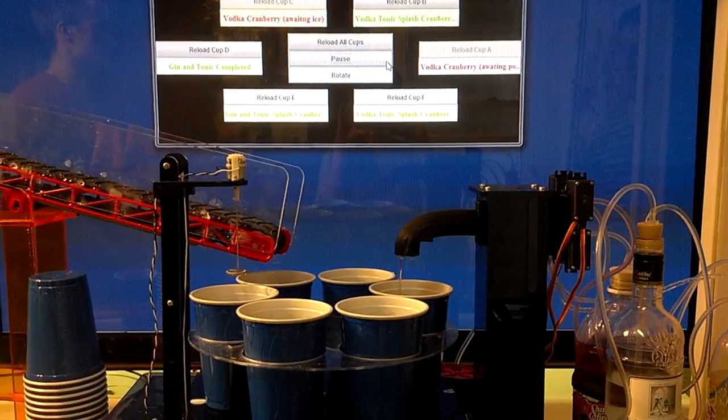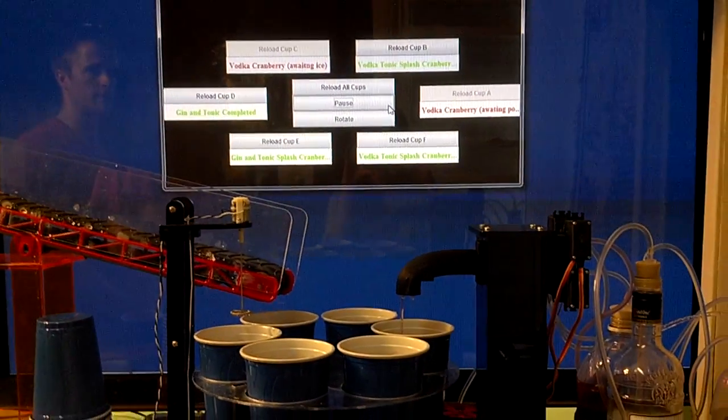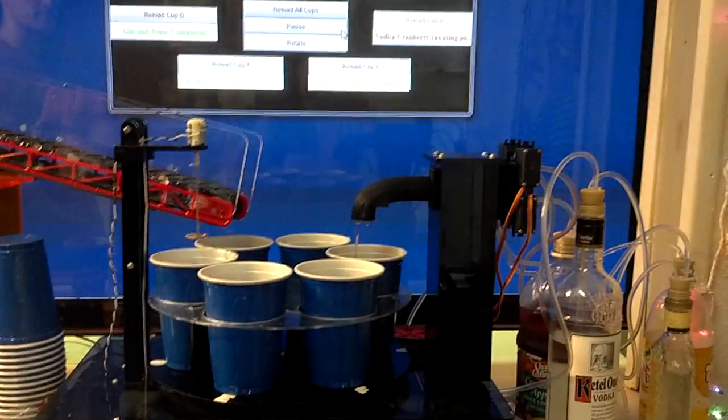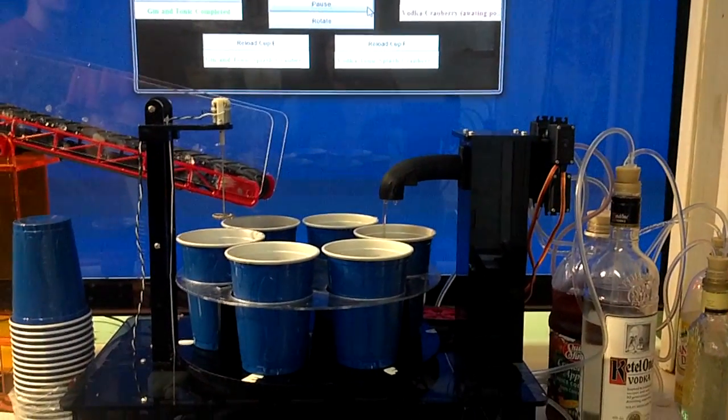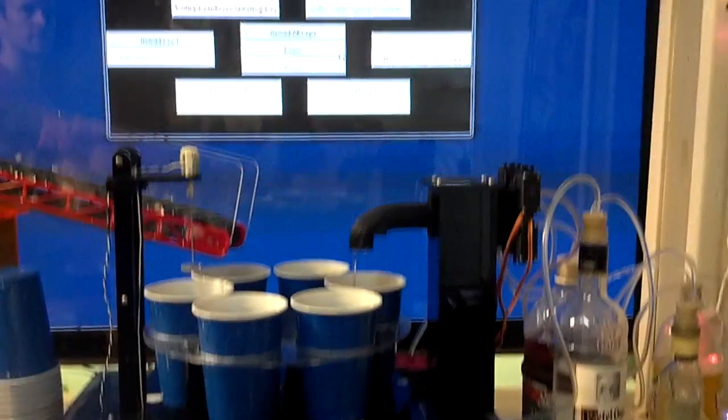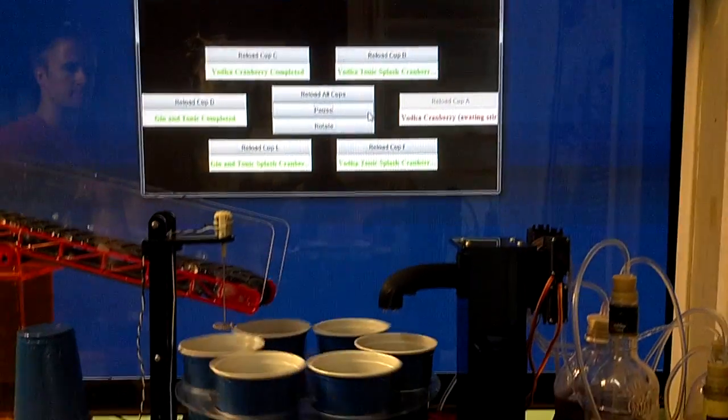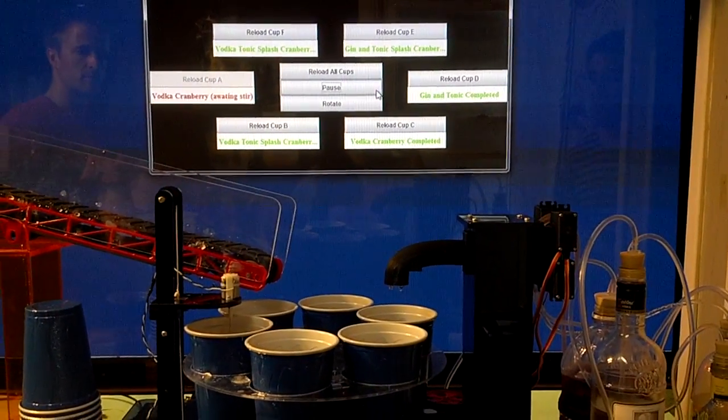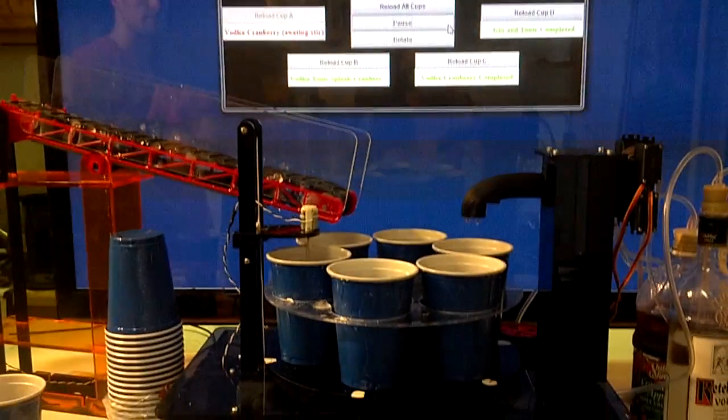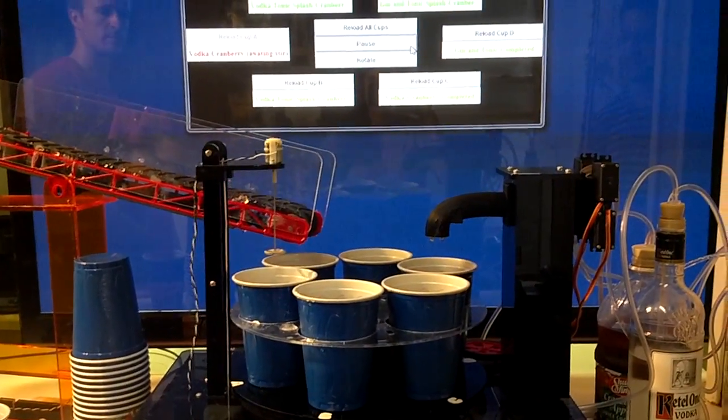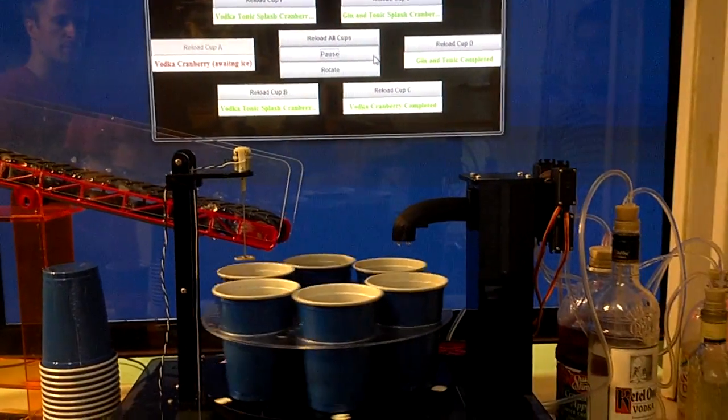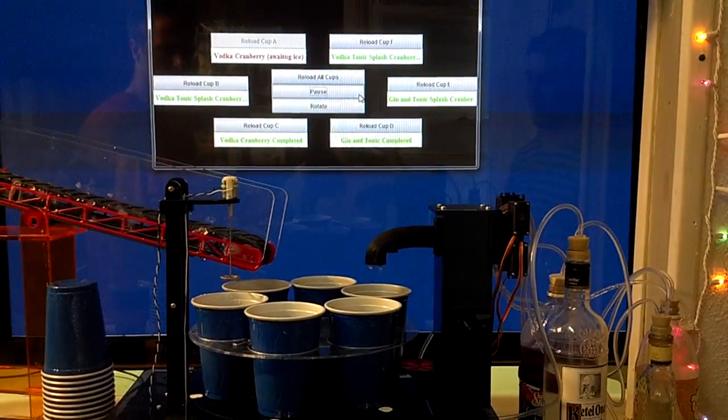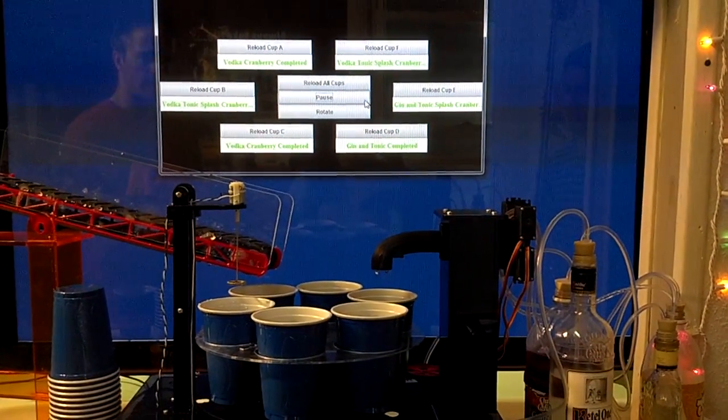As you can hear, the system is also announcing what drinks are being made available as they're being made. So we have one more vodka, two more vodka cranberries. You're right, the cranberry is ready in slot A.